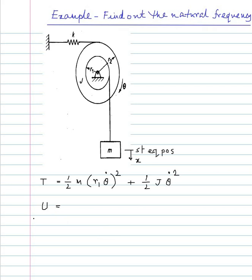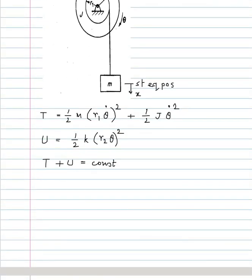For the potential energy, as mentioned, you need not consider it from the undeformed position of the spring — only from the static equilibrium position. From the static equilibrium position, the spring deformation is r2 times theta, so the potential energy is half k r2 squared theta squared. Now write T plus U equals constant.